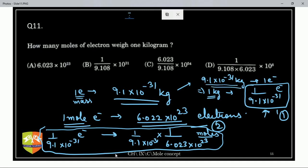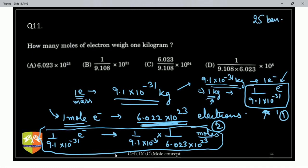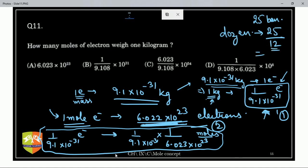Gandhar, let me clarify: 1 kg of electrons carries 1/(9.1 × 10⁻³¹) electrons (from unitary method). And 1 mole of electrons has 6.022 × 10²³ electrons. To find moles, divide: 1/(9.1 × 10⁻³¹) electrons ÷ (6.022 × 10²³ electrons/mole). It's like having 25 bananas and finding dozens — divide by 12. Similarly, divide by Avogadro's number.